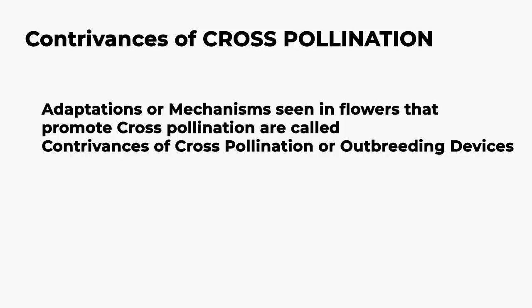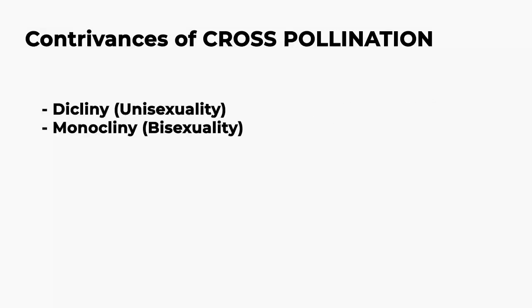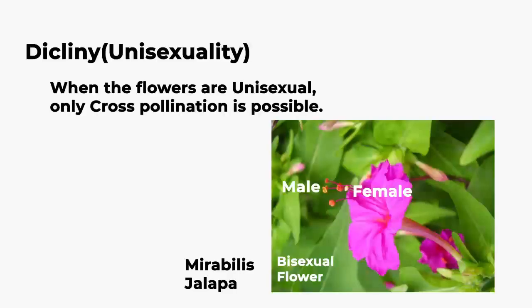The adaptations or mechanisms seen in flowers of plants for cross-pollination are called contrivances of cross-pollination or outbreeding devices. They are dicliney or unisexuality, and monocliney or bisexuality. Self-pollination occurs only in bisexual flowers because both sex organs are present in the same flower, making it easy to transfer pollen from male to female sex organ.